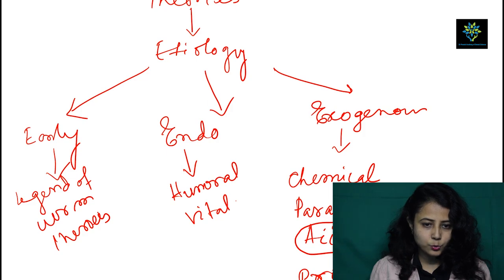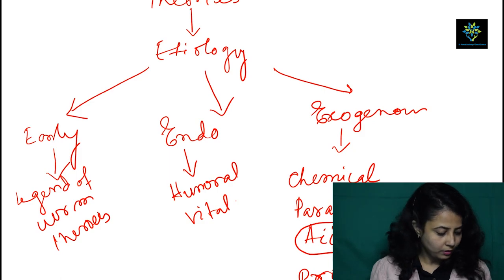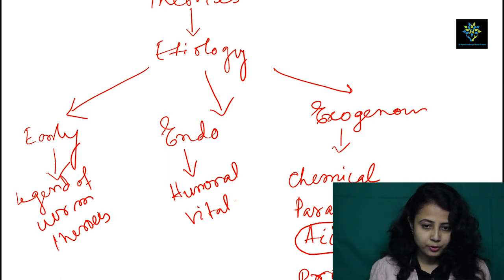Under early theories we have the legend of worm theories. In this we have humoral theory and vital theory.